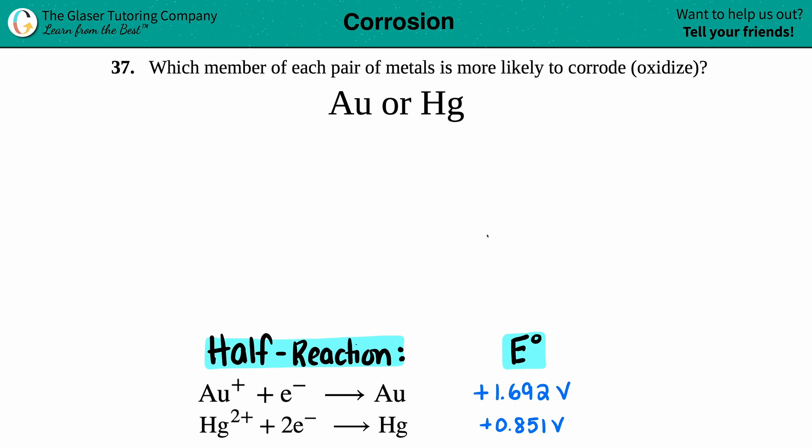Number 37, which member of each pair of metals is more likely to corrode or more likely to oxidize? So in this case, I have a sample of gold, AU, and mercury, which is HG. If I have a sample of both of them, which one would corrode or oxidize faster or first?